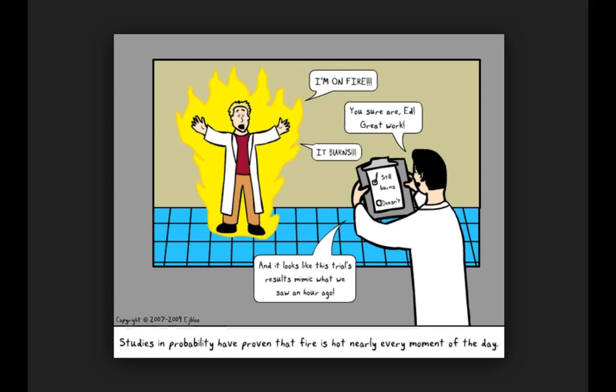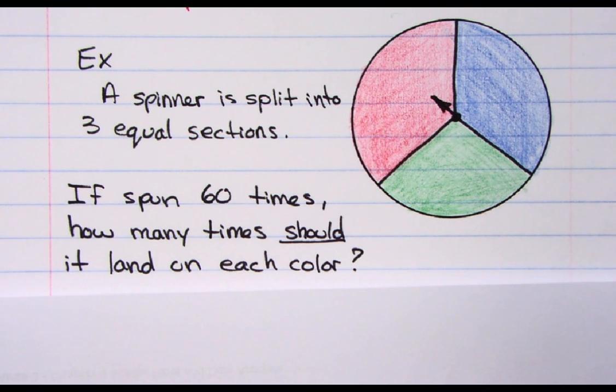You don't have to draw this one out, but here's an example. A spinner is split into three equal sections: blue, red, and green. If spun 60 times, how many times should it land on each color?